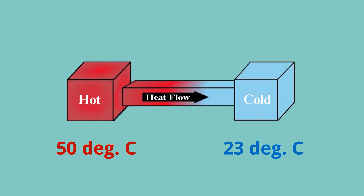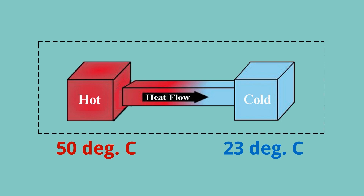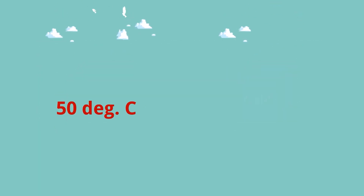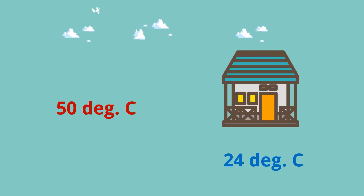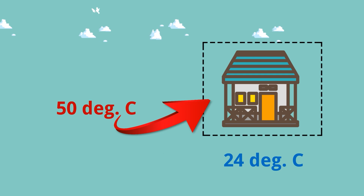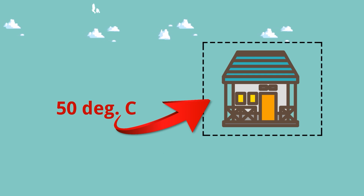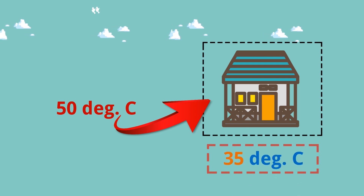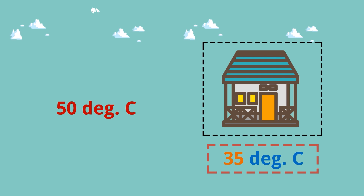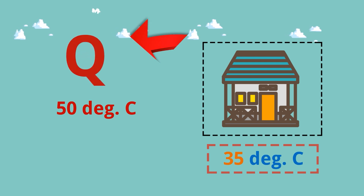This is a simple heat transfer philosophy which we have learned in our basics. Now consider outside is very hot at about 50 degrees centigrade and your room is 24 degrees centigrade. Gradually the heat will flow from outside to inside the room and the room temperature will increase — say it becomes 35 degrees centigrade. And 35 degrees centigrade is not comfortable to us.